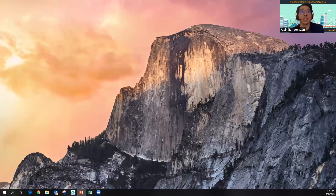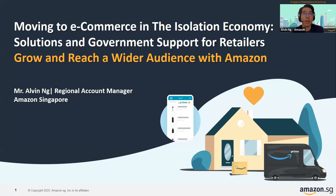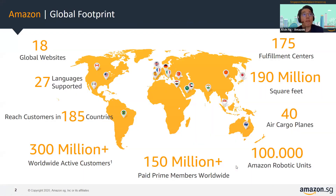Good afternoon. Thank you, Song Jie and Sharon. I'm Elvin from Amazon. Today I'll be sharing with you how you can leverage Amazon to expand your business. Amazon has 18 global sites, including Amazon.sg, and we currently have 300 million worldwide active customers across 185 countries. This really shows that Amazon is a trusted platform, and we are growing rapidly.